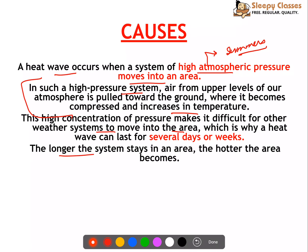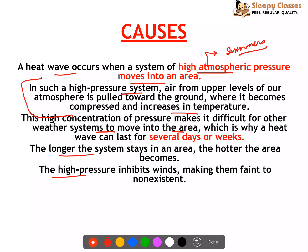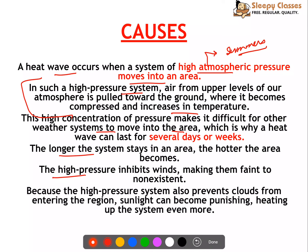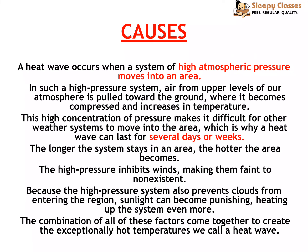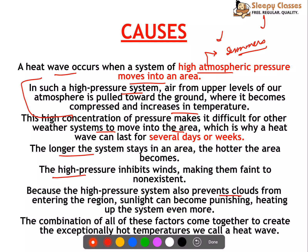The longer the high pressure system stays, the hotter the area becomes. The high pressure also inhibits winds, making them faint to non-existent. Additionally, clouds don't form, so sunlight becomes more punishing and heats the system even more. The combination of these factors creates exceptionally hot temperatures we call a heat wave. In an exam, you can actually form a flow chart showing: high atmospheric pressure → lasts several days → no winds allowed in → no clouds → intensified heat wave.